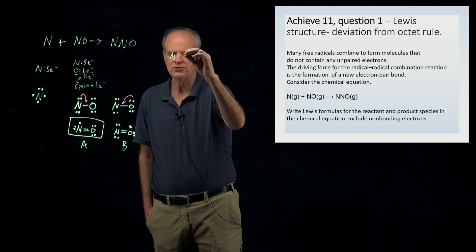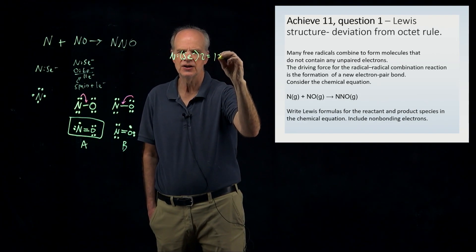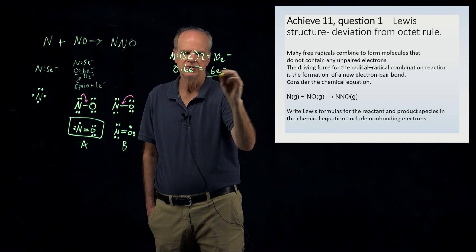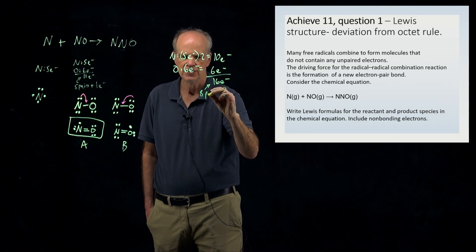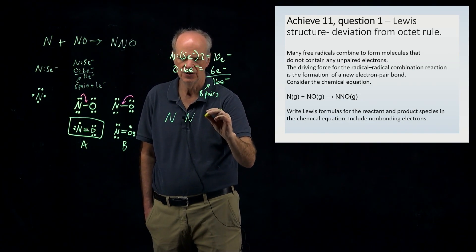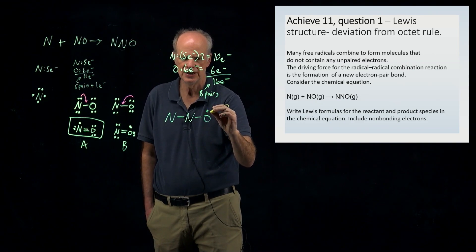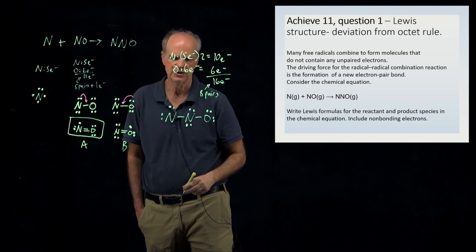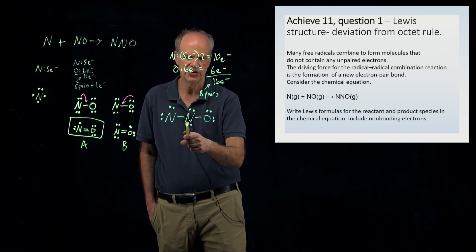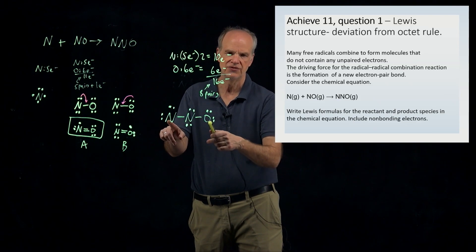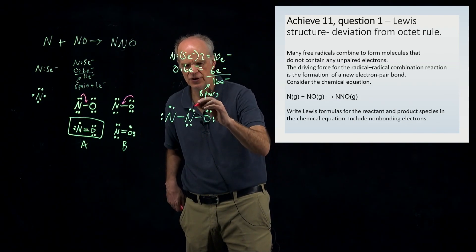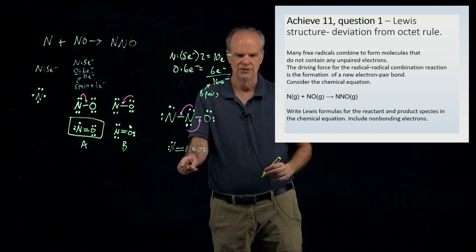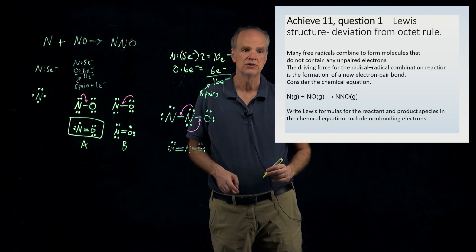For N₂O: two nitrogens give 5 × 2 = 10 electrons, plus oxygen gives 6, for a total of 16 electrons, or eight pairs. Setting up the skeletal structure and distributing all eight pairs initially leaves the terminal nitrogen and oxygen without octets. Moving a lone pair from the central nitrogen toward the terminal nitrogen and another lone pair toward oxygen gives the correct Lewis structure for N₂O with all atoms satisfying their octets.